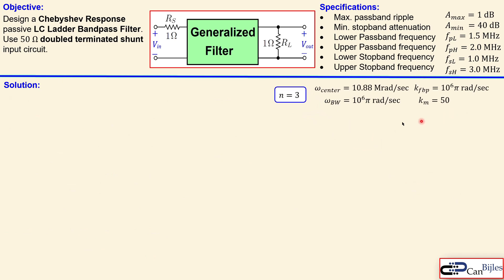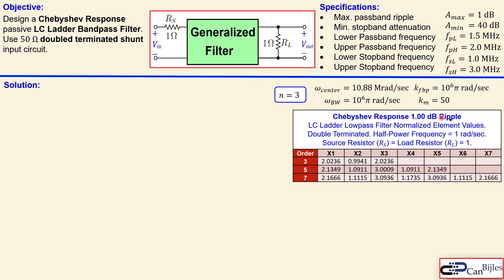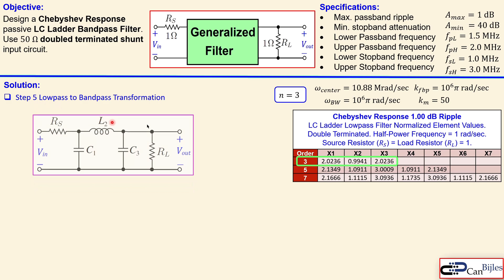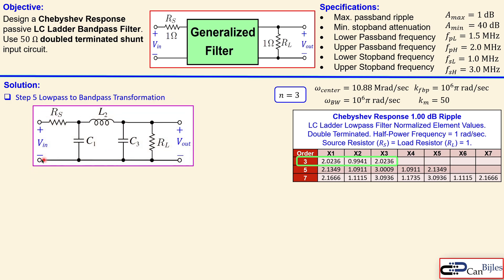Now bringing the data together and looking at a table of Chebyshev response 1 dB ripple, these are the coefficients for the normalized values of the low-pass filter. This is the row we need: X1, X2, and X3 are the element values for the low-pass prototype circuit. C1 has a normalized value of 2.2036 farads, L2 has 0.9941 henries, and C3 has the value of 2.2036 farads. These are not practical, so we need to scale them up to meet our specifications.